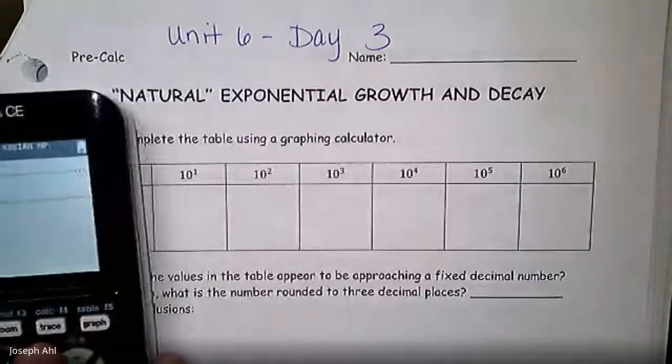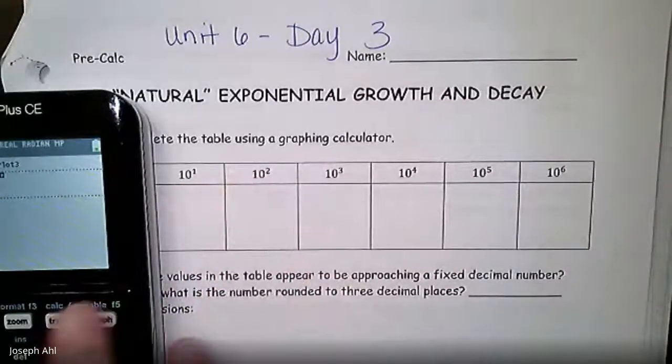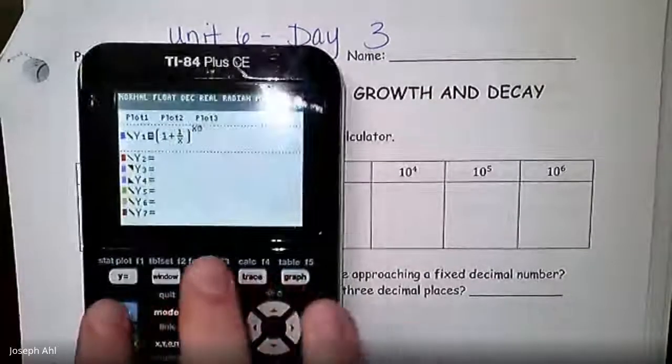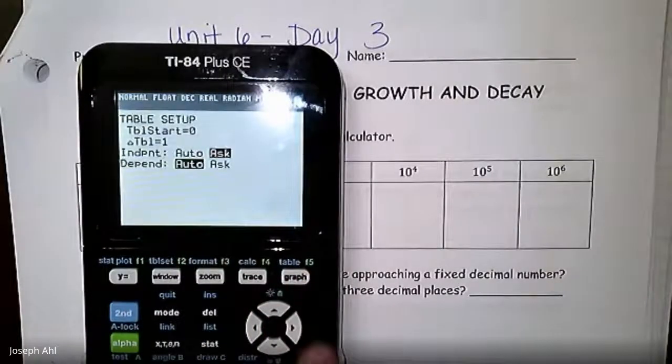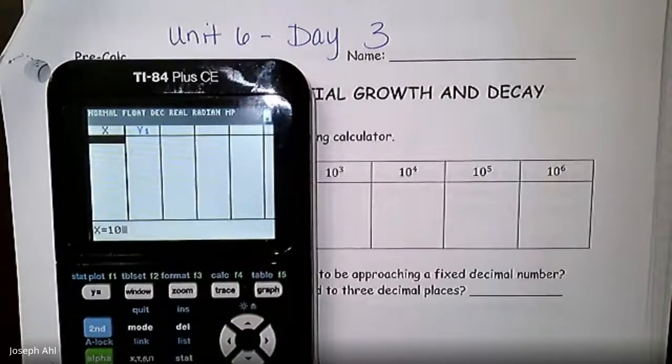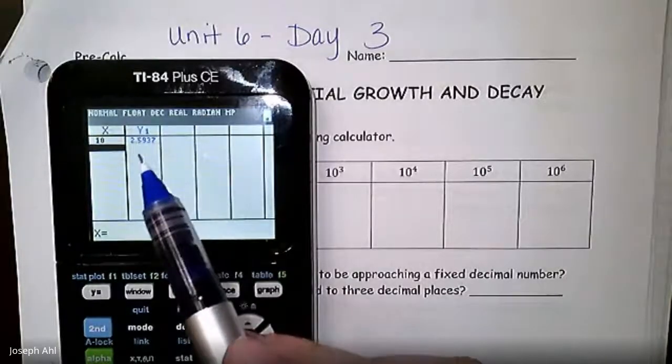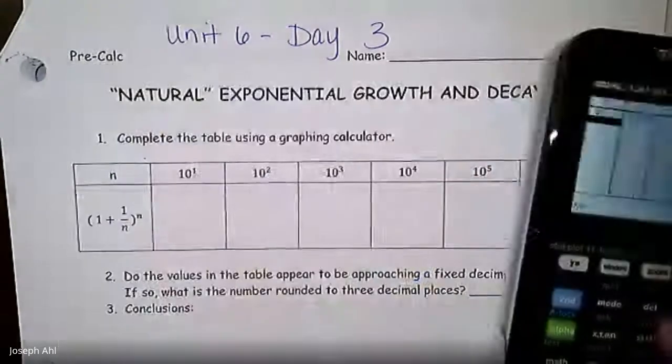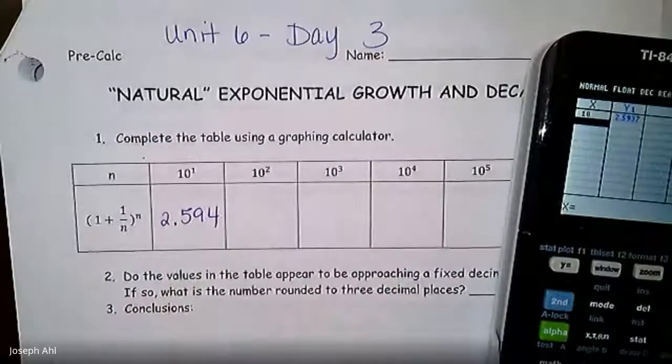If you go to the table, we want very specific values of x: 10, 100, 1,000, and so on. I'm going to go to second window, the table setup, and switch the independent over to ask, so that when I go to my table, it should be blank. I can type in x equals 10, and you can see that the y value there is 2.594, to the nearest thousandths place.